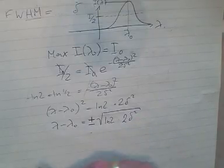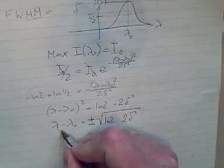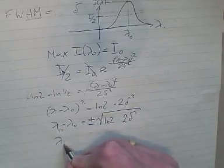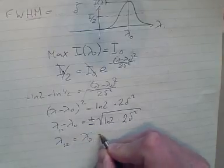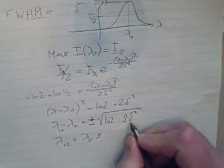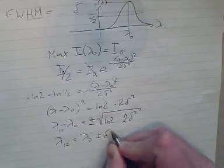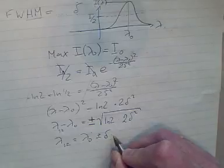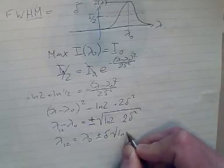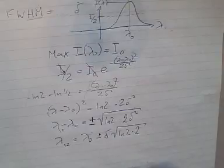That means you'll also get an answer as lambda one and lambda two. So lambda one or lambda two will be lambda zero plus or minus delta times square root of ln(2) times 2.